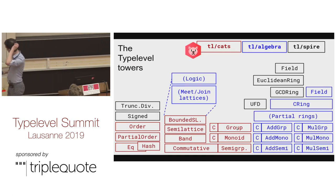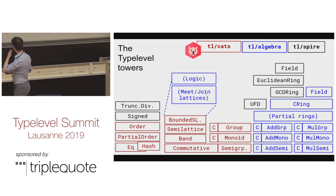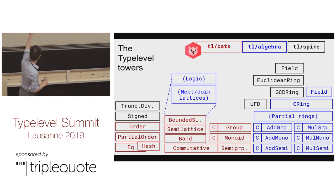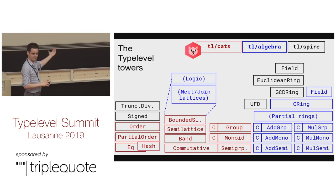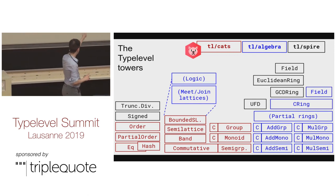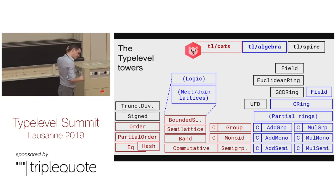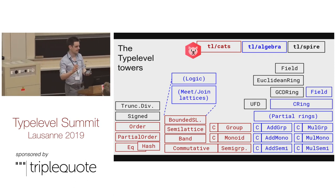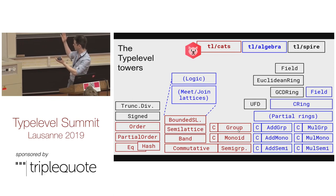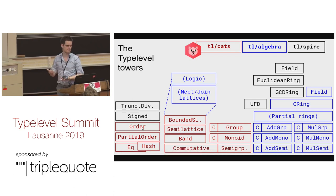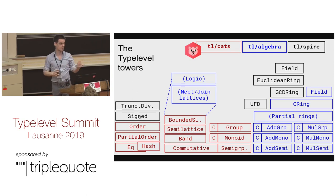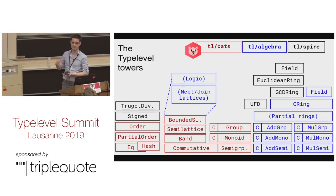Now we move to the type-level towers. There are meet-join lattices in logic — it's like a complete world in itself. And in parentheses are all the partial rings, another world in itself. Let's spend a minute on this slide, because if you start to use Spire, this is what you'll have in your face. Eq, partial order, order — that's already in Cats kernel. Signed is on top of order: you have a notion of zero and which side of zero you are. And truncated division, which is a very interesting story.